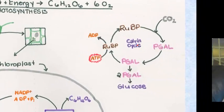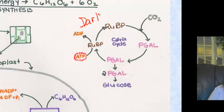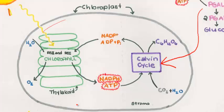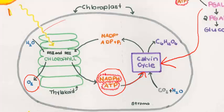Here is the Calvin cycle diagram. This is the chloroplast; here are the light reactions inside the thylakoid. Water is being split, oxygen is given out, and ATP and NADPH are also produced — those go to the Calvin cycle, or dark reactions. Carbon dioxide and some water also come in.